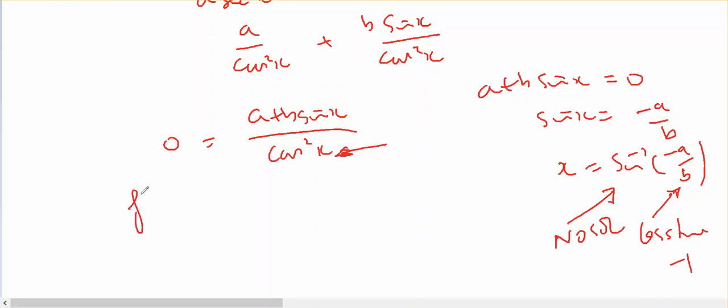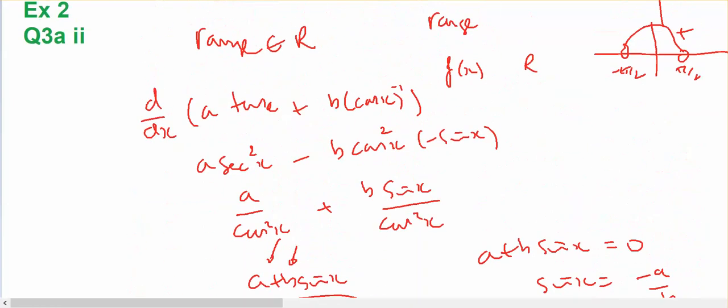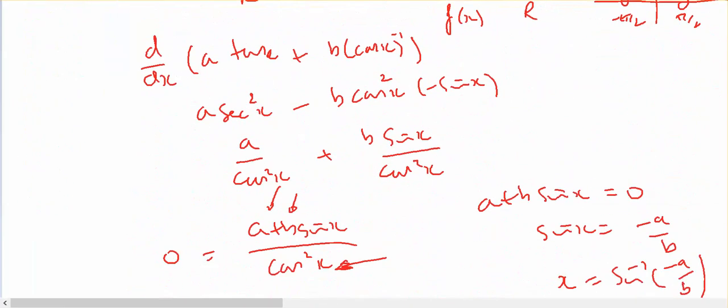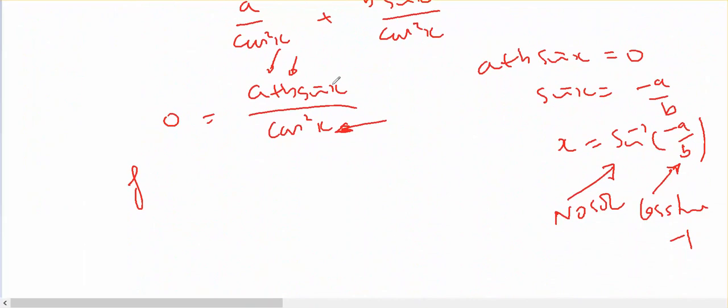So if a is positive, b is positive, b is smaller than a, sine will be between negative one and one. Which means that my numerator will be positive. Therefore, f'(x) is always bigger than zero.